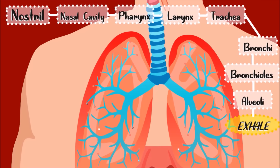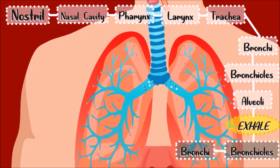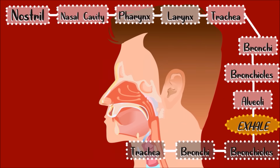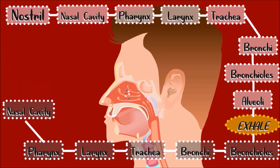Then we breathe out, or exhale. The air with carbon dioxide travels out from the alveoli through the bronchioles, then to the bronchi, then moves to the trachea, then to the larynx and pharynx, then to the nasal cavity, and then out of the body.